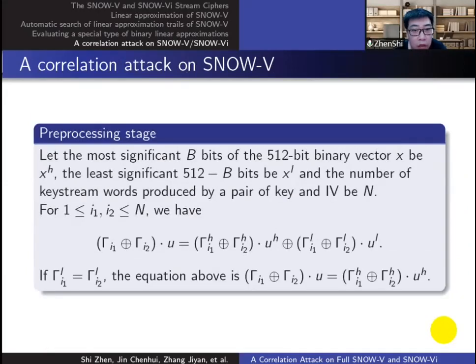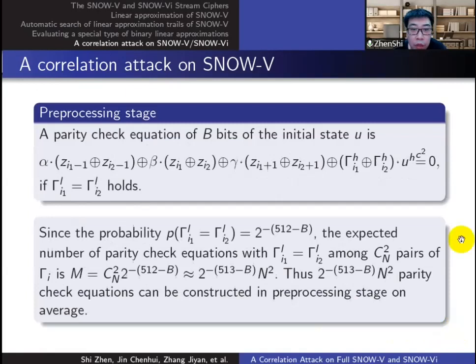We cannot guess all the initial state bits at once, so we will find some effective collisions such that part of the masks of the initial state are zero in the pre-processing stage. By collision, we can get parity check equations of this form which only contains part of initial state bits. The number of check equations can be calculated from the collision probability.